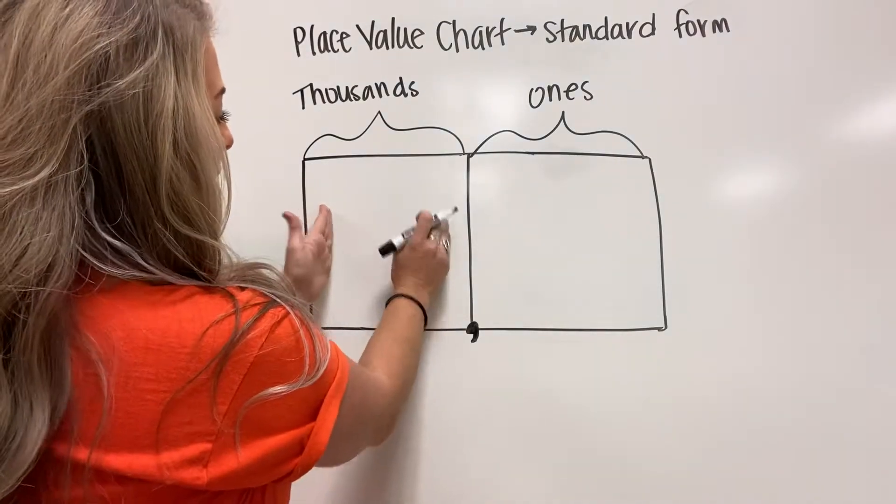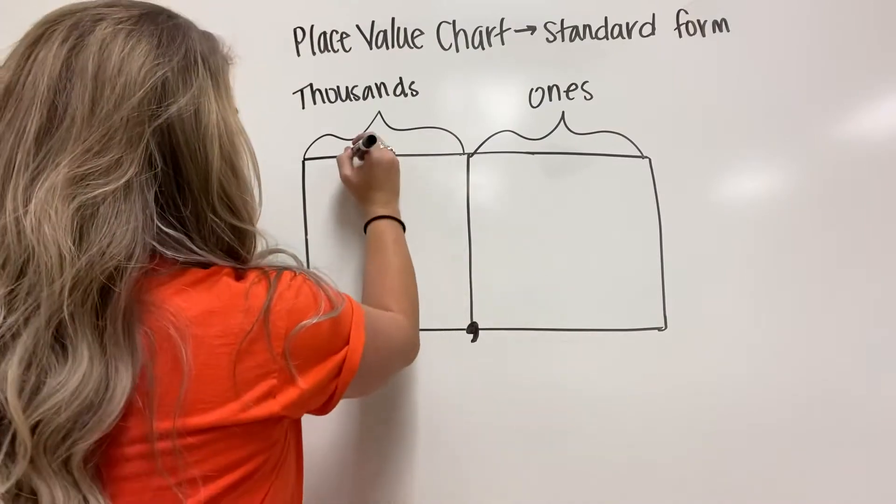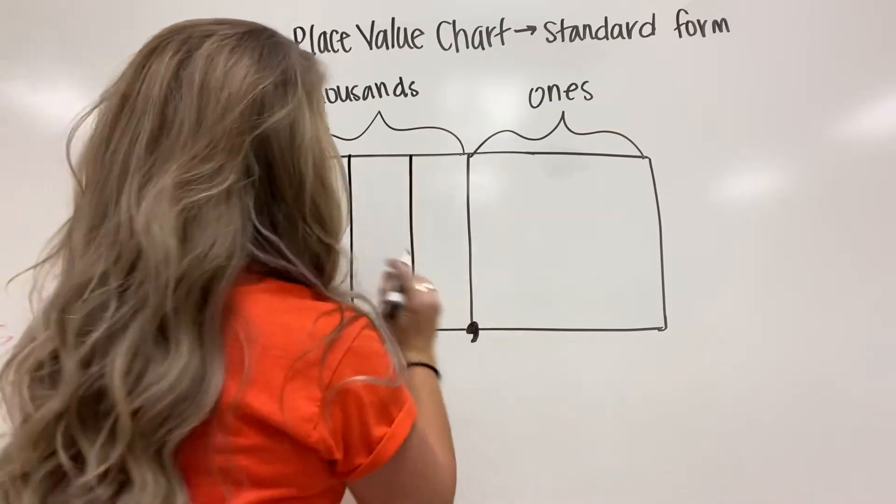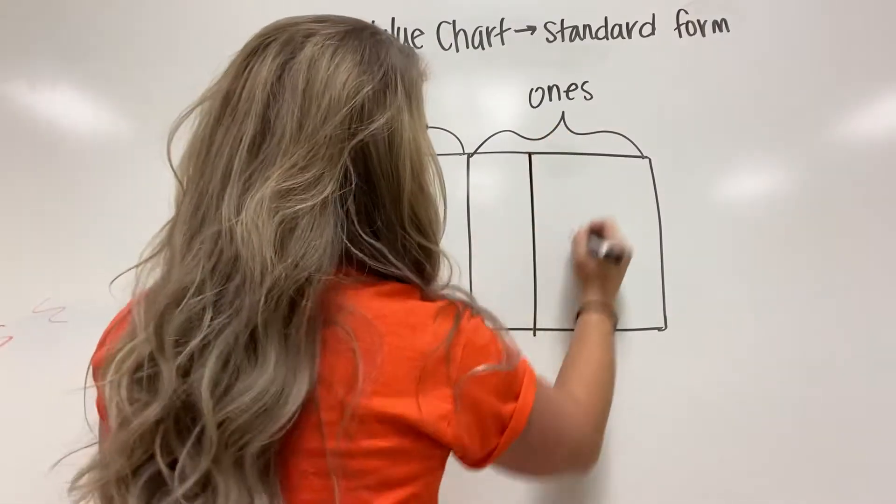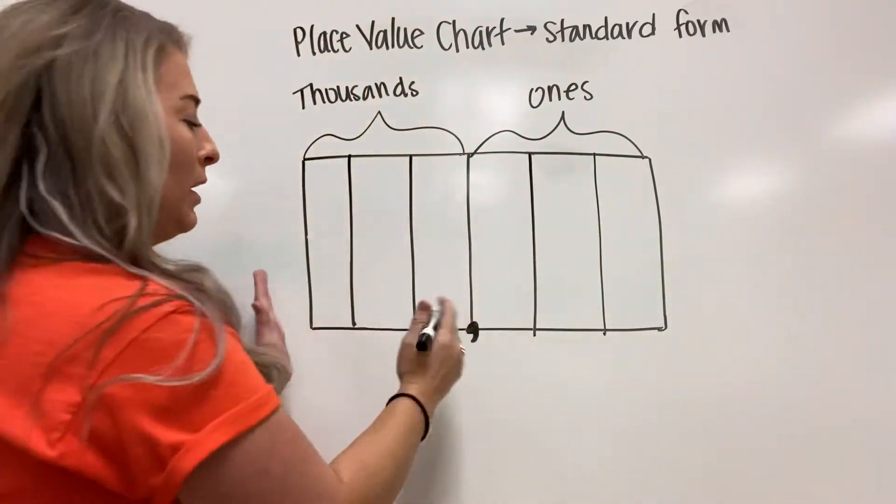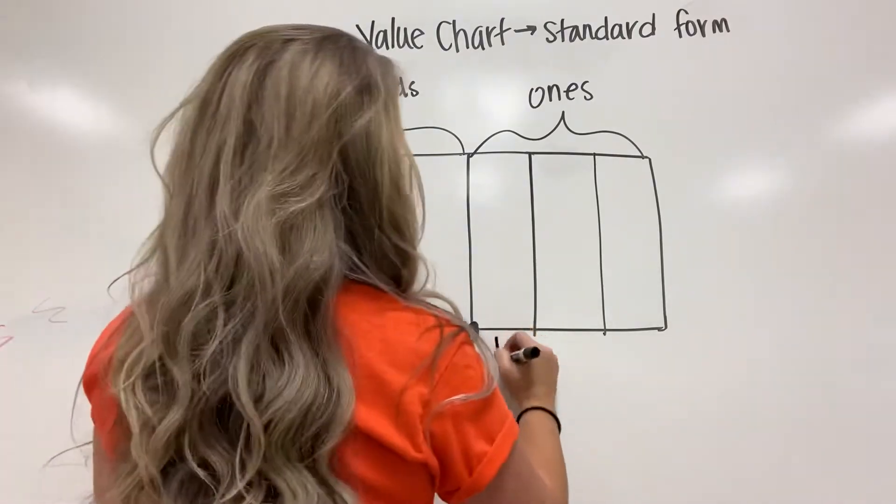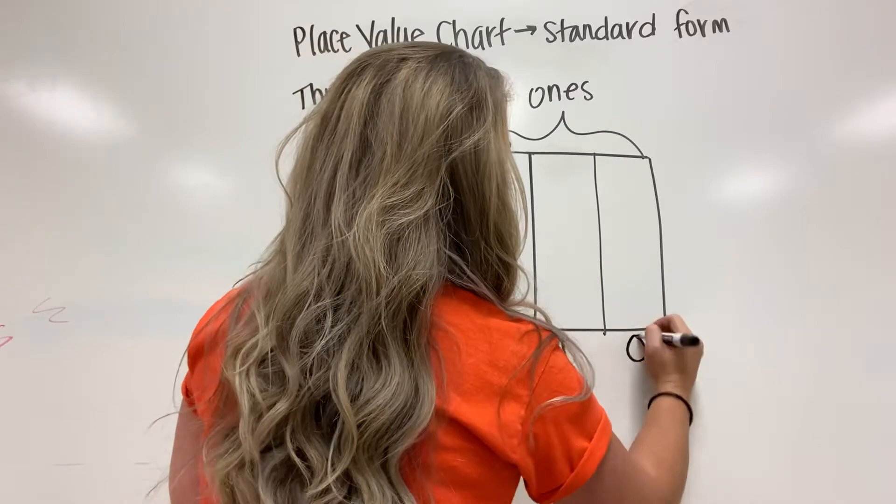So every period has three places: one, two, three, one, two, three. And every period has hundreds, tens, and ones, right? Just like last year - hundreds, tens, and ones.